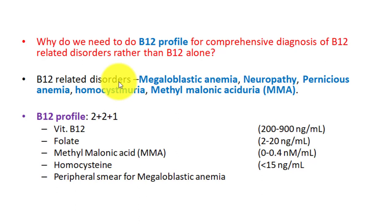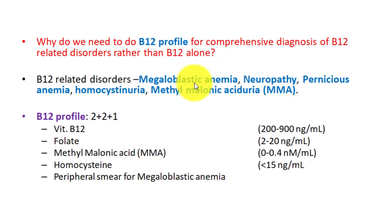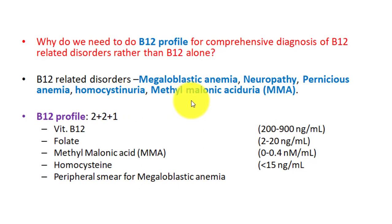These are the disorders related to vitamin B12 deficiency or metabolic deficiency: megaloblastic anemia, neuropathy, pernicious anemia — which is due to deficiency of intrinsic factor causing reduced absorption of vitamin B12 from the ileum — homocystinuria, which happens when vitamin B12 is deficient and homocysteine cannot convert into methionine via methionine synthase, and methylmalonic aciduria, which results from a defective mitochondrial enzyme — methylmalonyl coenzyme A mutase.